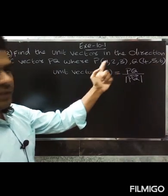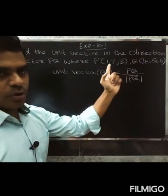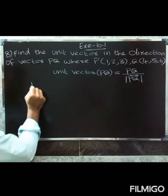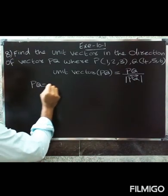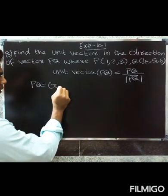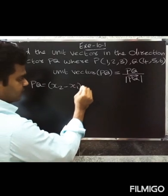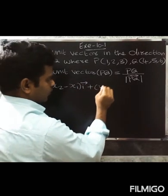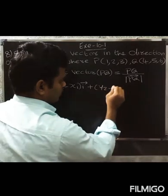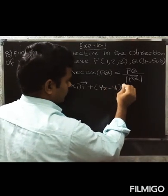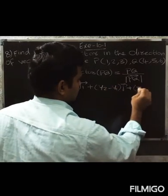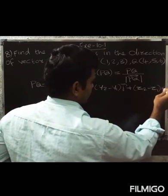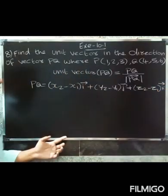First of all, we need to find PQ. Since we have P and Q as ordered points, PQ is equal to (X2 minus X1) i-vector plus (Y2 minus Y1) j-vector plus (Z2 minus Z1) k-vector.